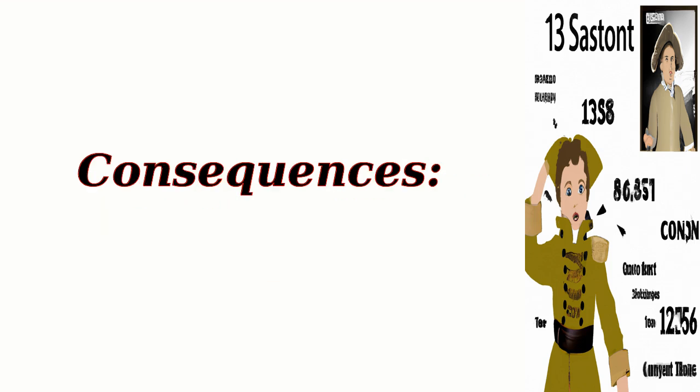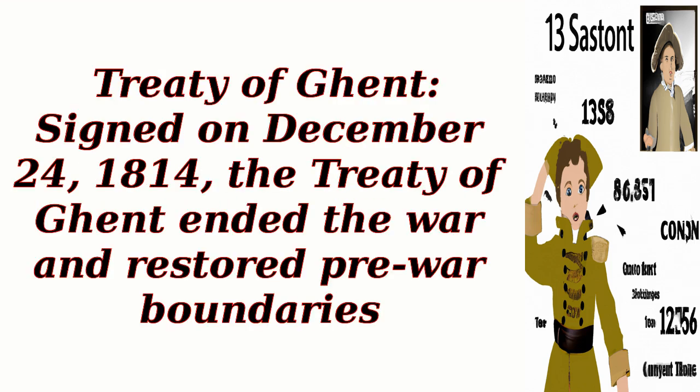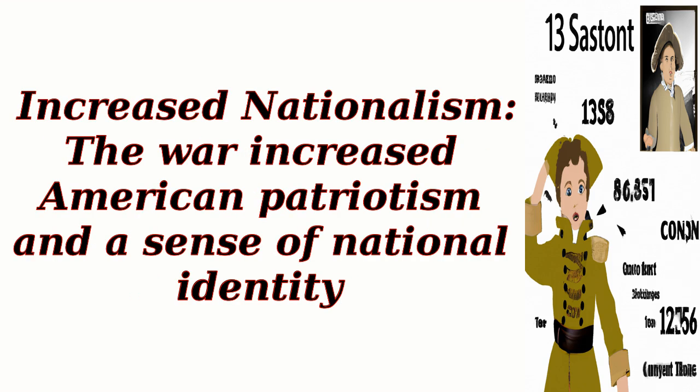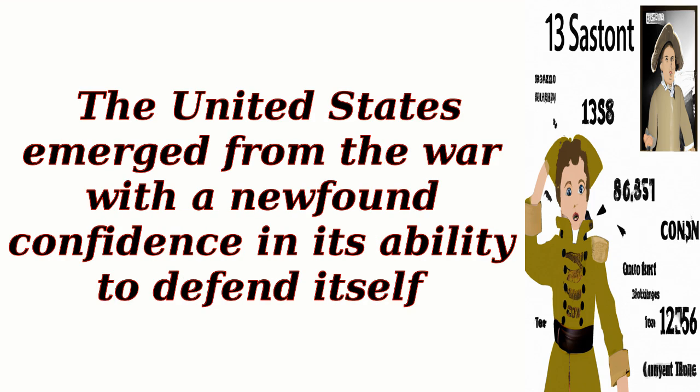Consequences. Treaty of Ghent: Signed on December 24, 1814, the Treaty of Ghent ended the war and restored pre-war boundaries. It did not address any of the original causes of the conflict, but effectively returned the status quo. Increased nationalism: The war increased American patriotism and a sense of national identity, and the United States emerged from the war with a newfound confidence in its ability to defend itself.